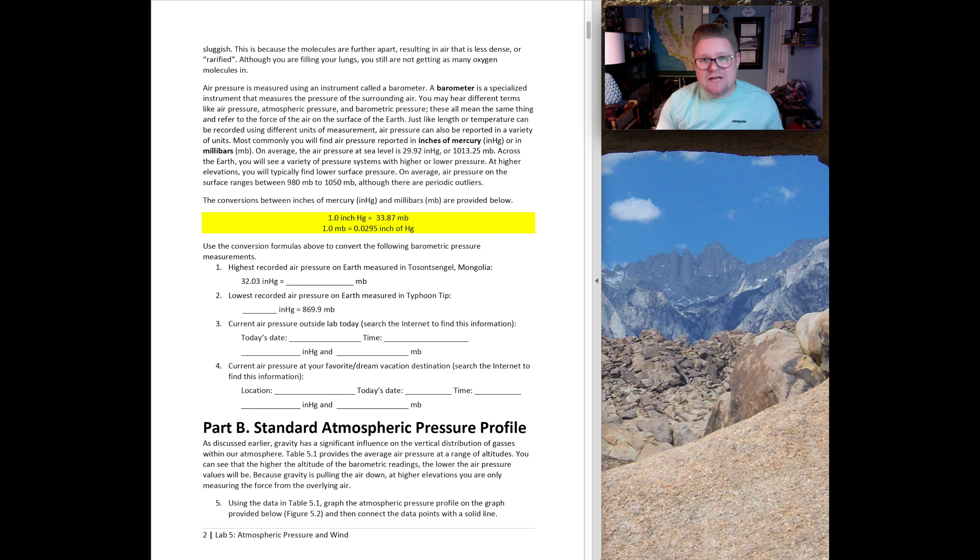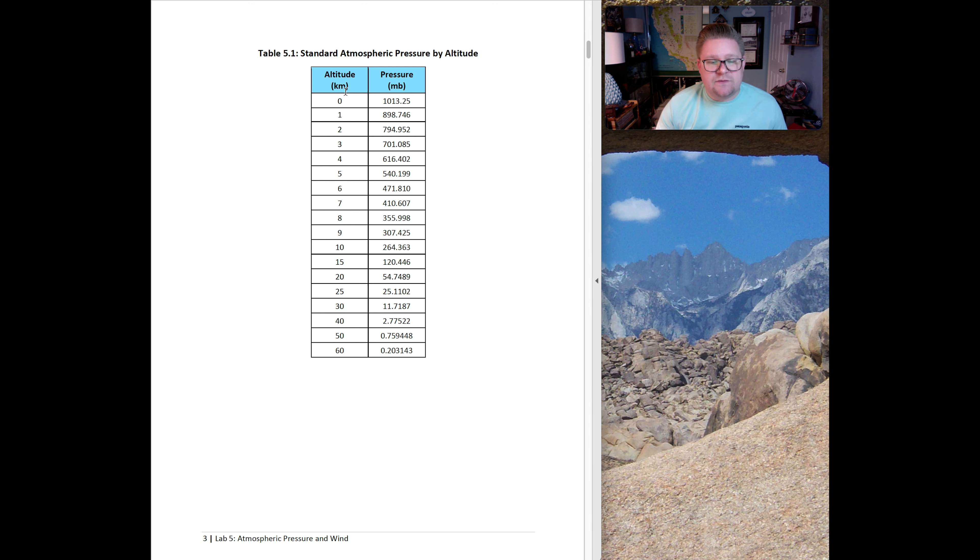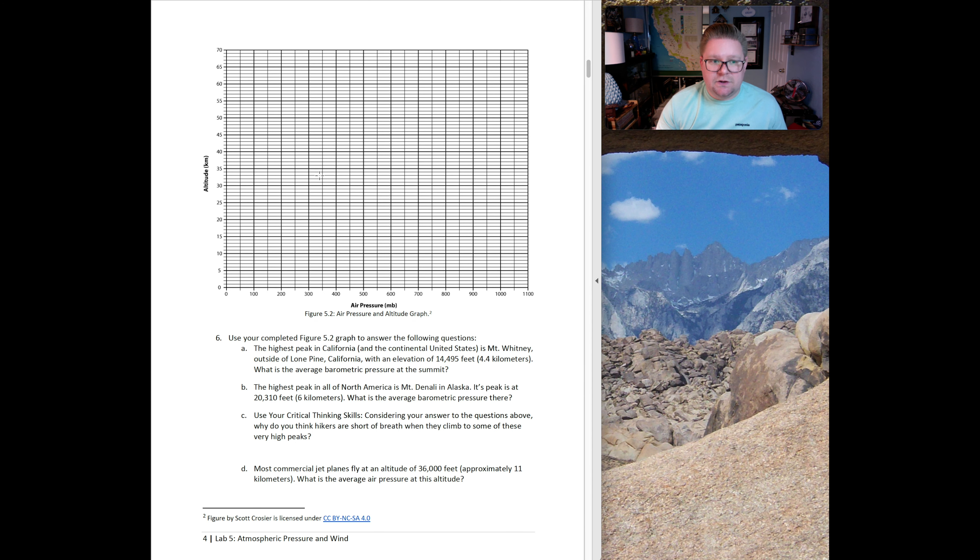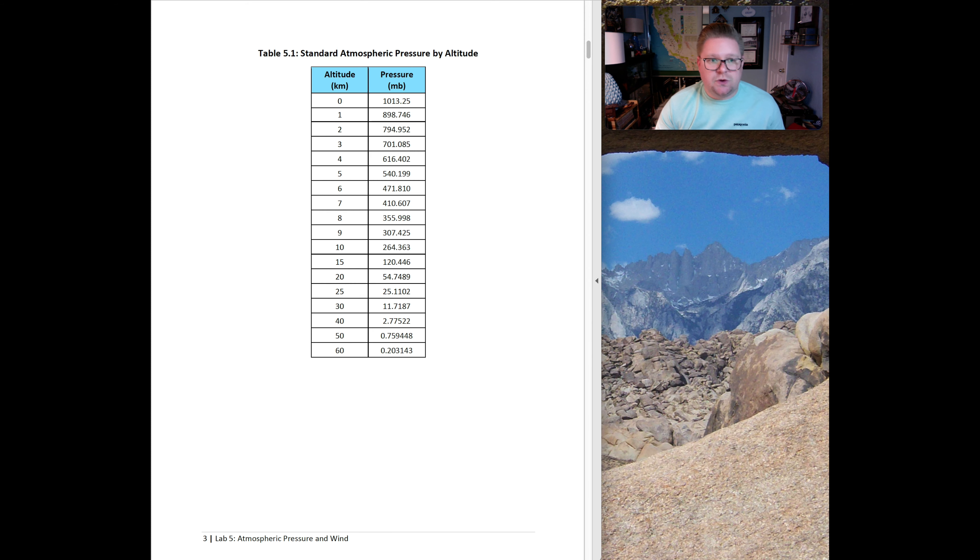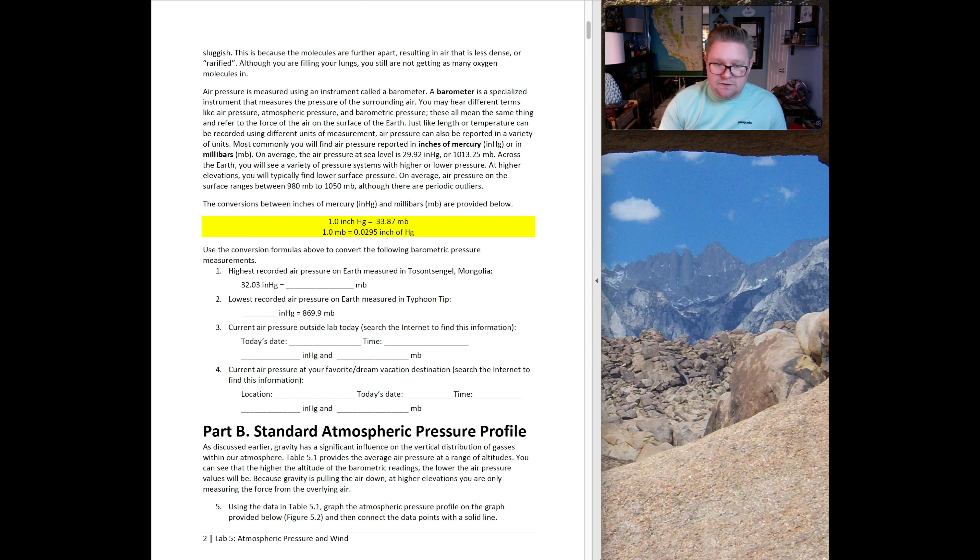Part B is called Standard Atmospheric Pressure Profile. Gravity has a significant influence on the vertical distribution of gases within our atmosphere. Table 5.1 provides the average air pressure at a range of altitudes. Question 5 is having us look at that information and graph it. As we can see, the higher the altitude, the lower the pressure. Using Table 5.1, graph the atmospheric pressure profile on the graph provided, and then connect the data points with a solid line.